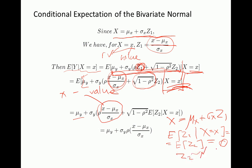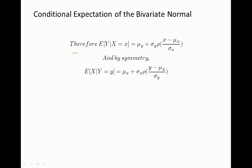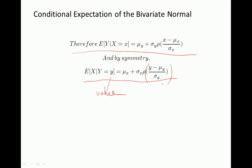Therefore the expression simplifies: the expectation of y conditional on x equals x is equal to mu y plus sigma y times rho times (x minus mu x) divided by sigma x. By symmetry, the conditional expectation of x given y equals y is equal to mu x plus sigma x times rho times (y minus mu y) divided by sigma y.